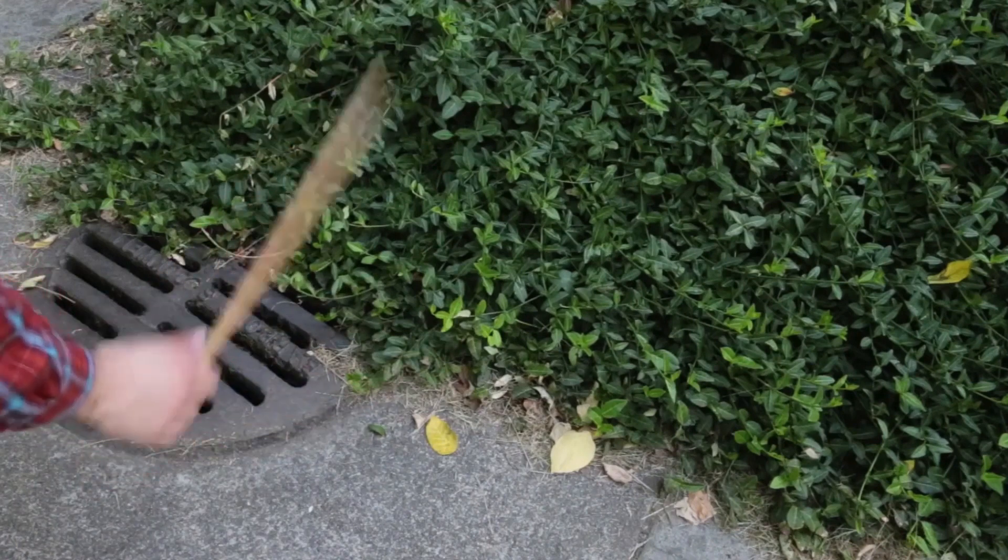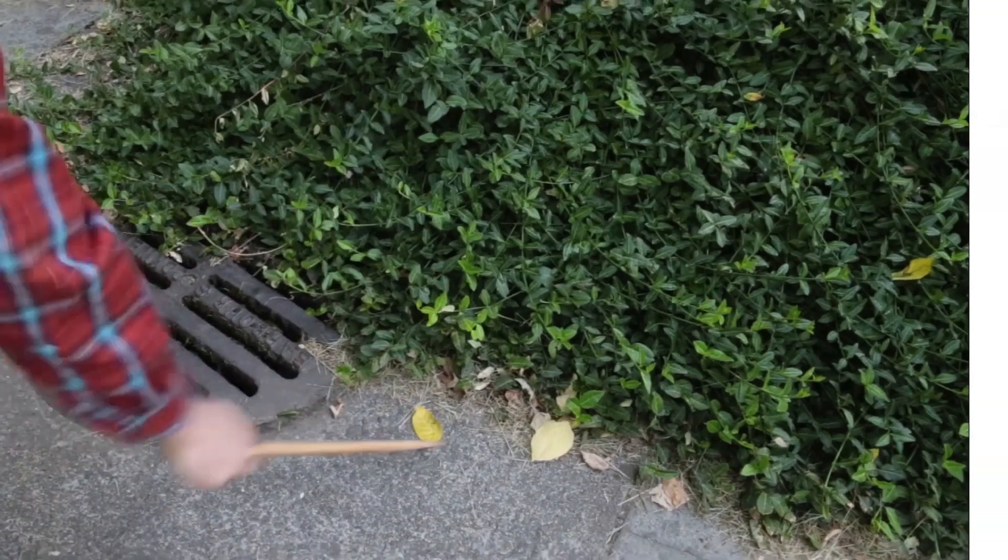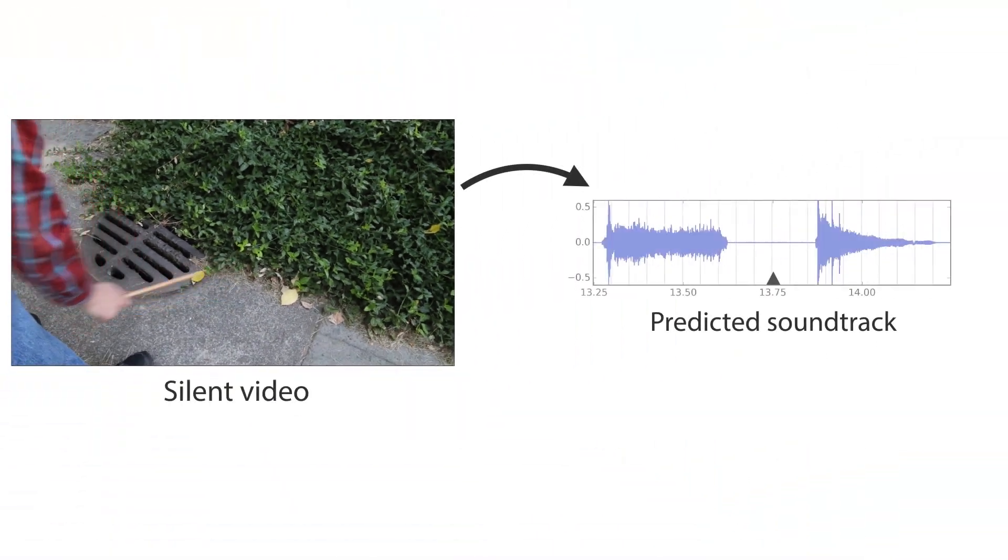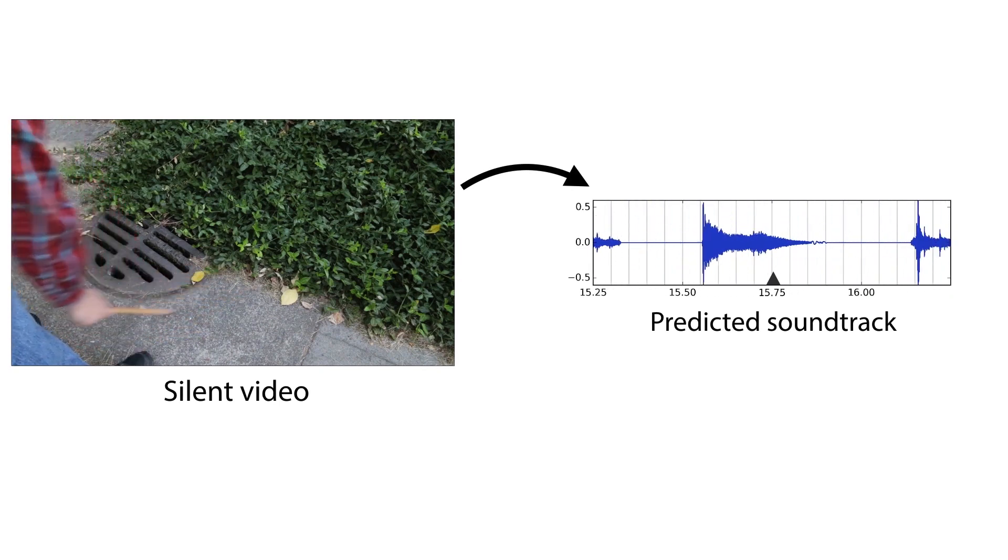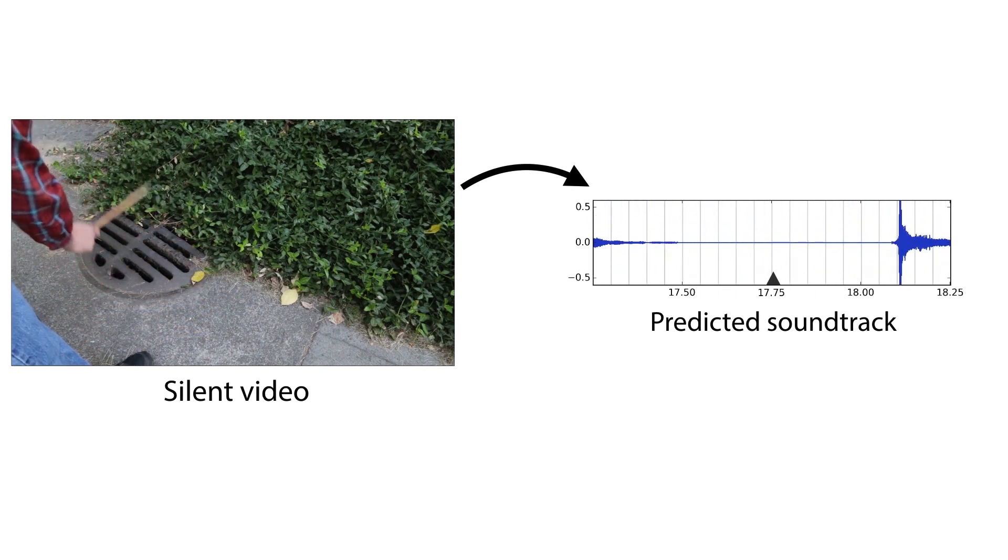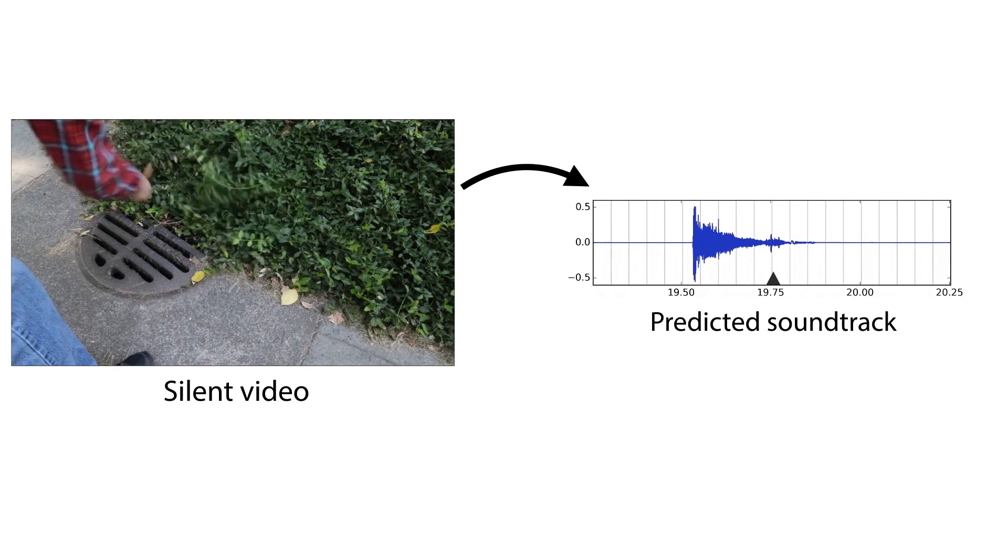In this work, we consider the material understanding task of predicting what sound something will make when you hit it. We give an algorithm a silent video of someone striking things with a drumstick, and we ask it to produce a plausible soundtrack to go along with it.